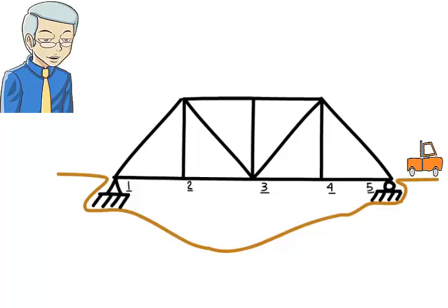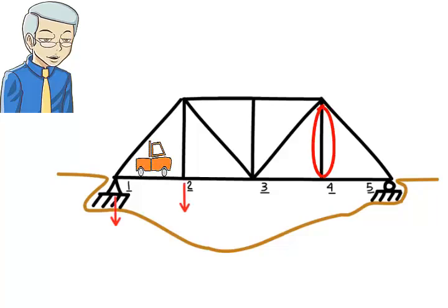The bridge truss must be analyzed under each loading case. Note that a truss member that actually carries an axial force in one loading case may become a zero-force member in another loading case. For example, when the load is applied at joints 1 and 2, the vertical member attached to joint 4 carries no internal force.